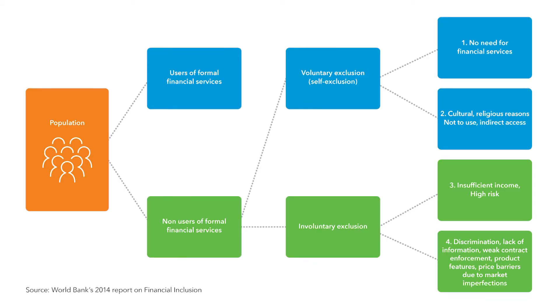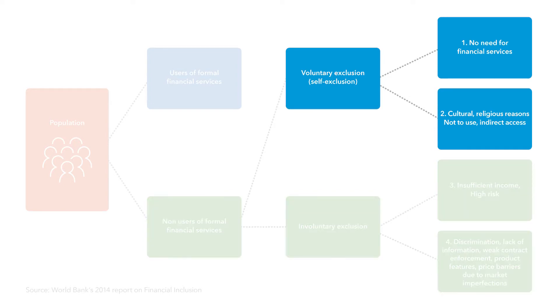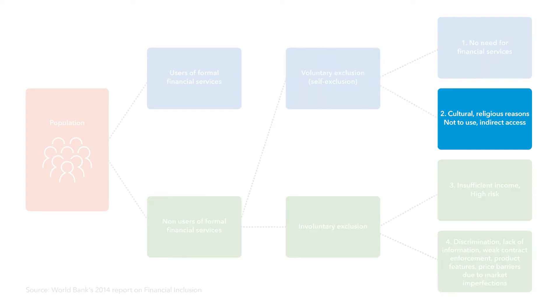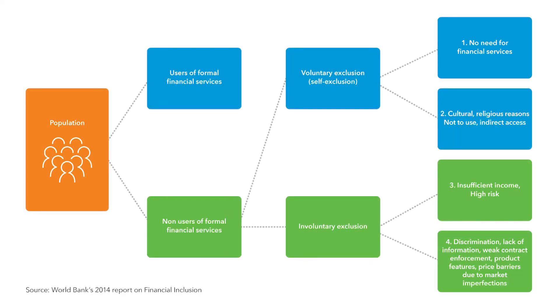So who are the excluded population? Among the excluded population — those not using formal financial services — some choose not to do so, either because of cultural or religious reasons, or because they feel they have no need for financial services. One significant part of this group comprises those who have access to financial services through a family member and therefore do not need to have their own account. Another reason for voluntary exclusion could be a lack of trust or understanding of financial services.